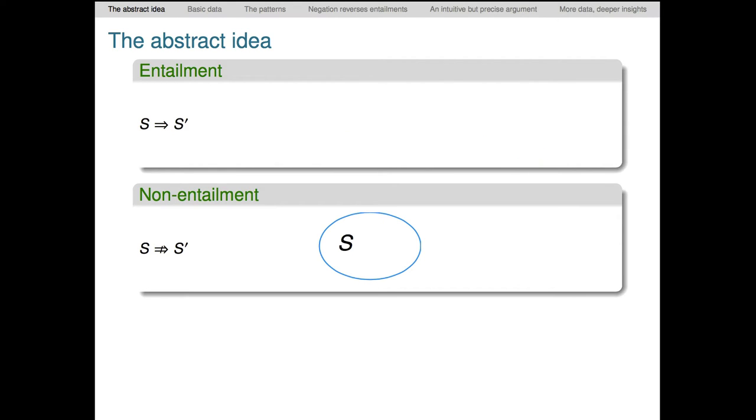Here's notation for the case where s doesn't entail s prime. It's the entailment arrow with a slash through it. For this to hold, we need only find one possible world where s holds but s prime doesn't. In pictures, that would look like this, and there just needs to be at least one possible world in this space where s holds and s prime doesn't.